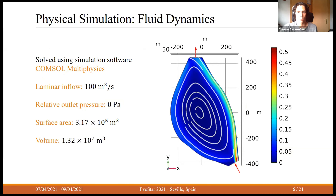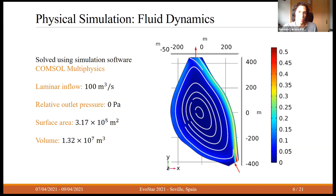The result we obtain sets a laminar inflow of 100 cubic meters per second and a relative outlet pressure of zero pascals. The colors show the velocity of the water at the lake surface, and the lines indicate the direction of water movement. We can infer a fast current flowing from the inlet to the outlet, shown in darker colors, and a vortex in the middle of the lake where water moves slowly in circles.